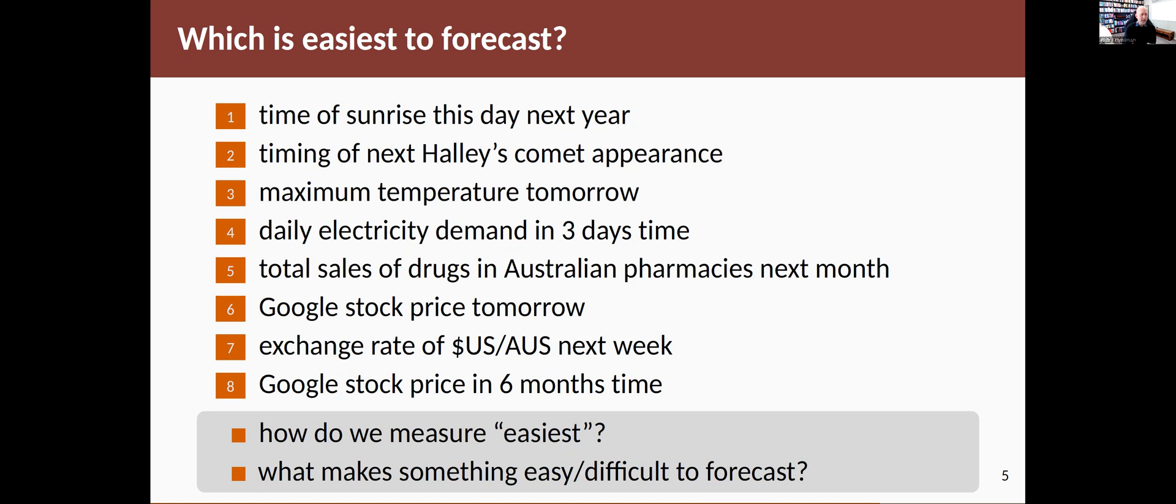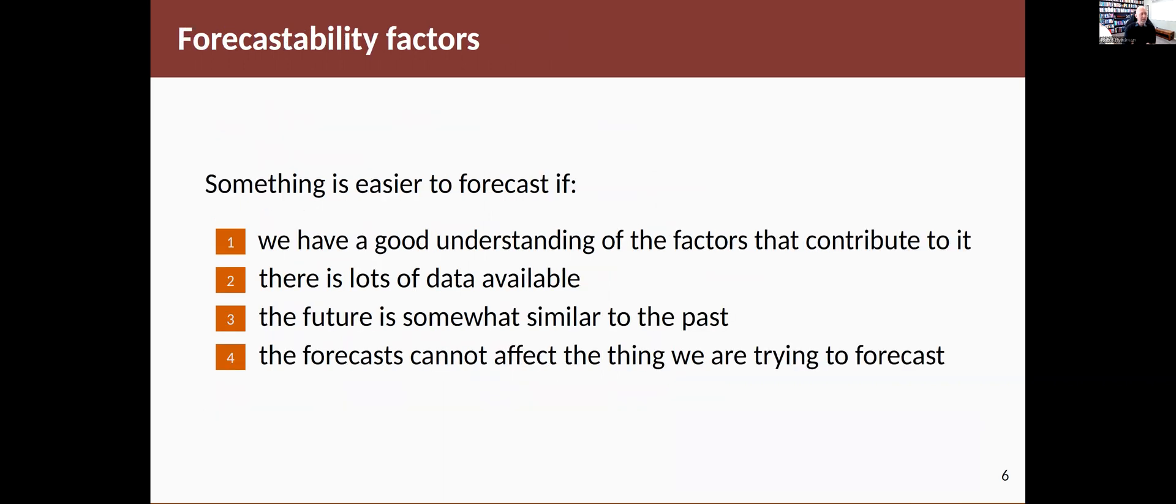We'll talk a little bit about how we measure easiest later on in this course. What makes something easy or difficult to forecast? We can discuss now. I've come up with four different things that I think contribute to how easy it is to forecast something. So something is easier to forecast if we actually understand a lot about what drives its variation, if we have a good understanding of the factors that contribute to that thing. Secondly, we need a lot of data so we can build a model. Thirdly, you want the future to be somewhat similar to the past, at least in a way that you can model. That doesn't mean the future has to be exactly the same as the past. It just means that the way things are changing has to continue into the future.